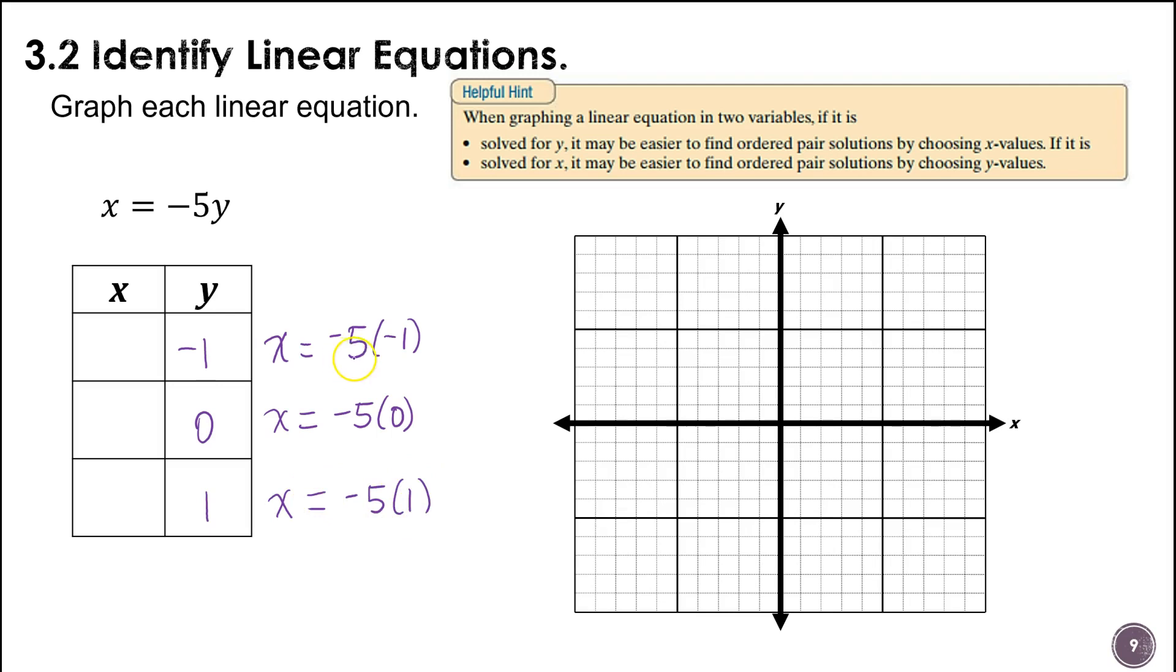So on the first one you can see negative 5 times negative 1 is 5. Negative 5 times 0 is, alright that one was a 5. Negative 5 times 0 is a 0. Negative 5 times 1 is negative 5. And then I can graph these ordered pairs. So I have an ordered pair at 5, negative 1. Remember we always go to the x coordinate first and then to the y. We have a 1 at 0, 0. And then also 1 at negative 5, 1. And then we will draw the line that connects these three points.